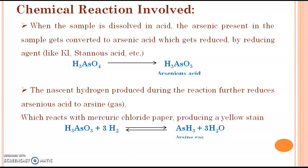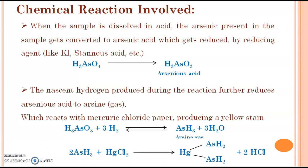Further, this formed arsine gas reacts with mercury chloride paper producing a yellow stain. Here is the reaction — this arsine gas which reacts with mercury chloride paper forms a yellow color stain. For this limit test for arsenic we use a special apparatus named as the gadget apparatus.